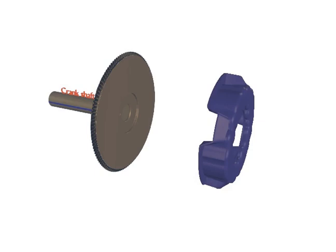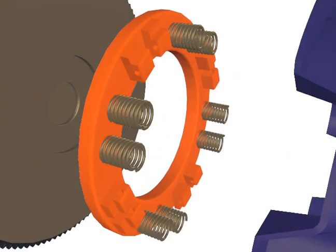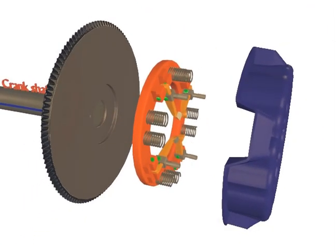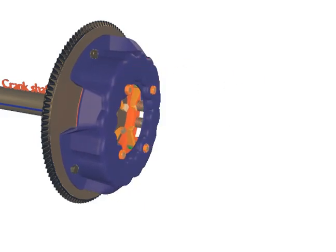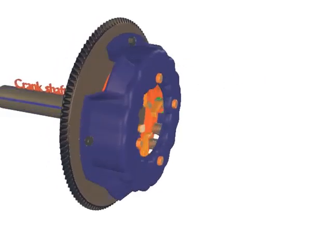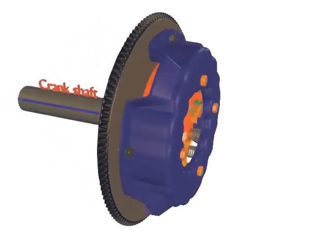The clutch cover assembly consists of a cover which carries the cast iron pressure plate, the pressure spring and the release lever. This entire assembly is bolted to the flywheel and rotates with it at all times when the engine is running.